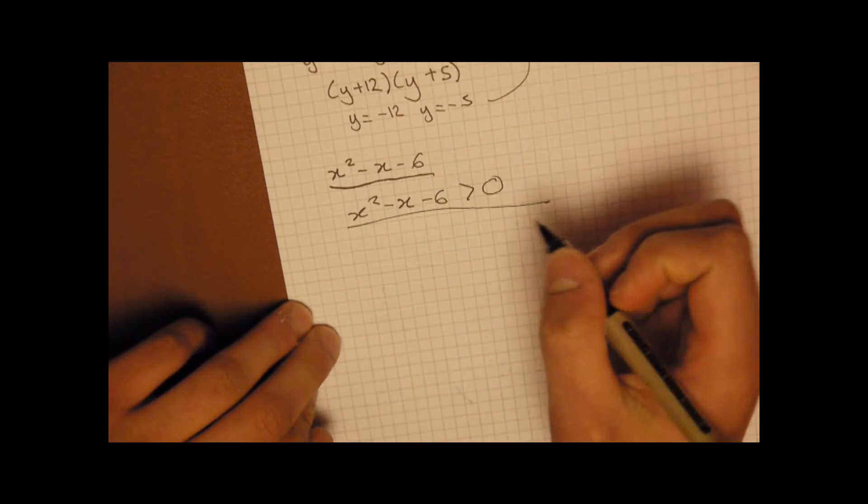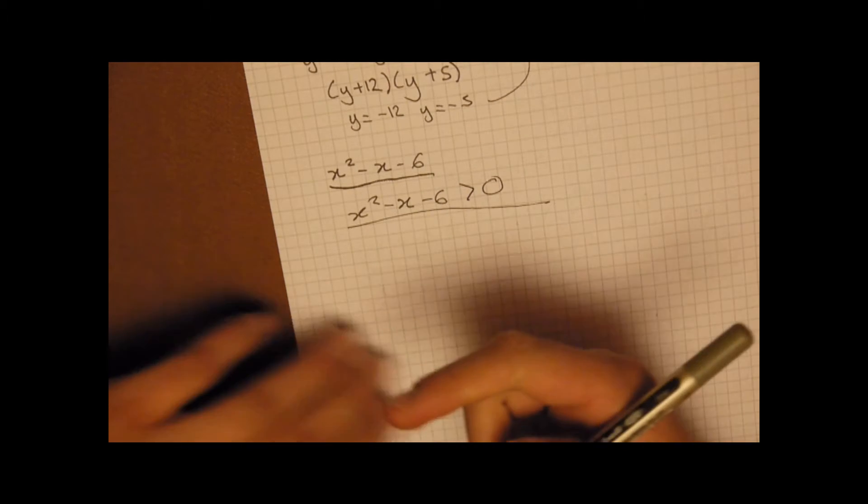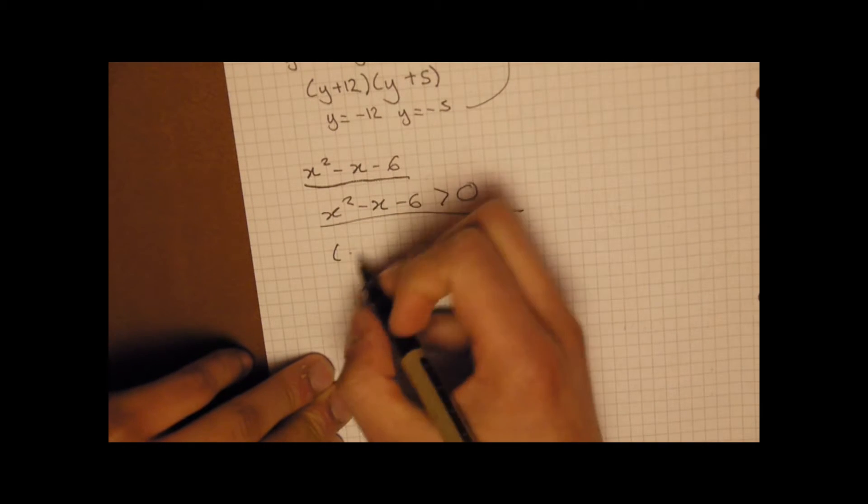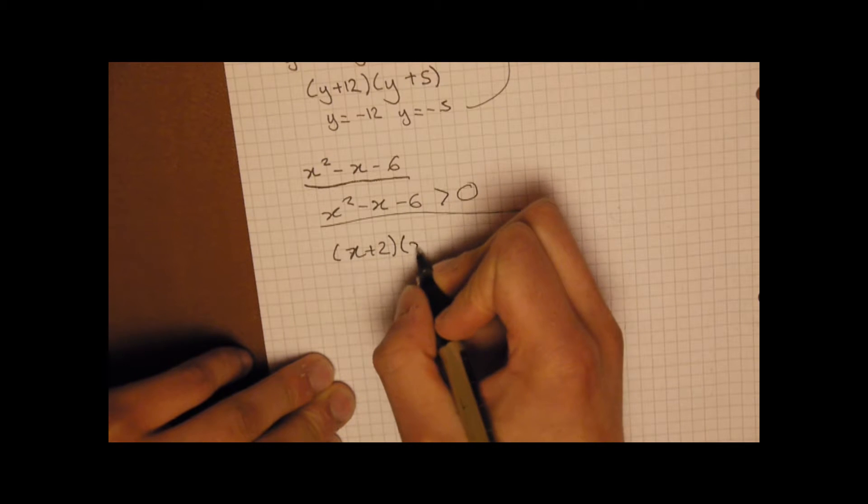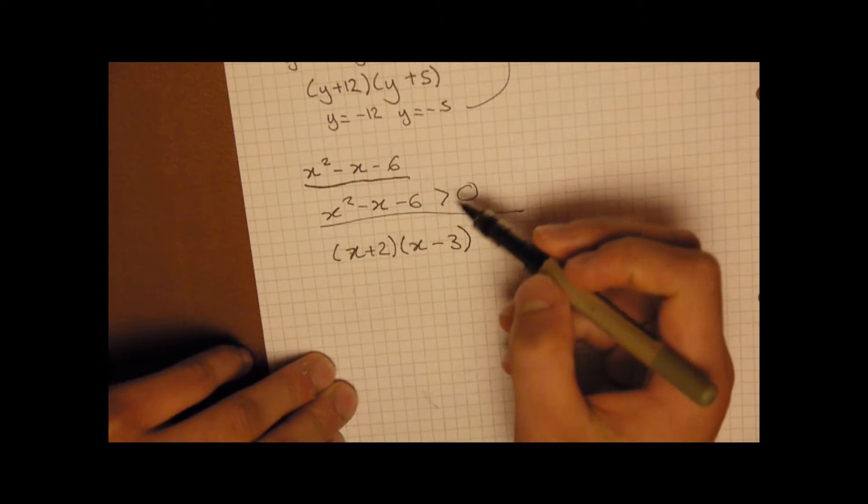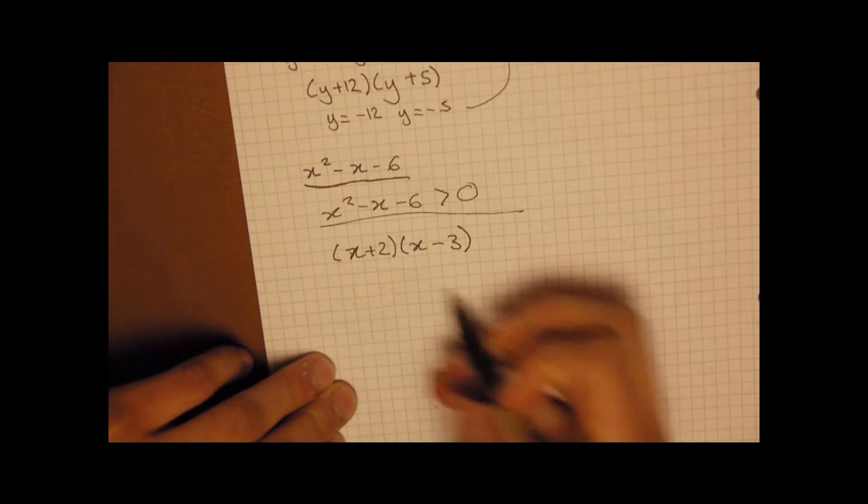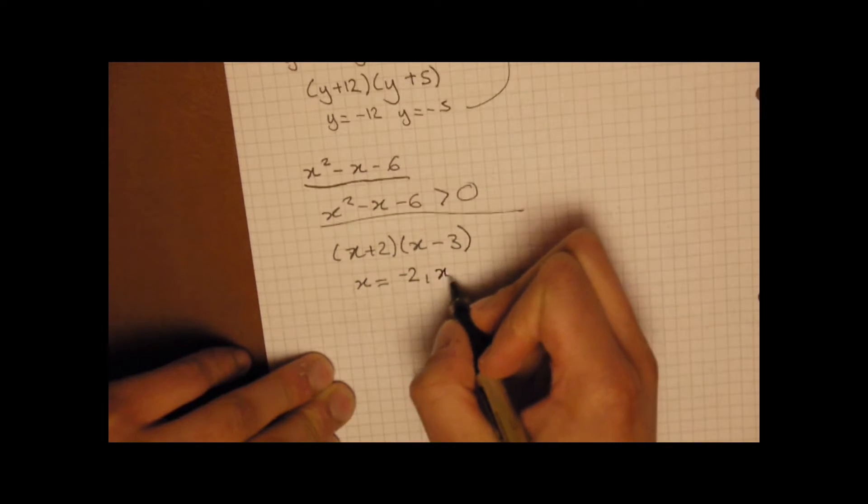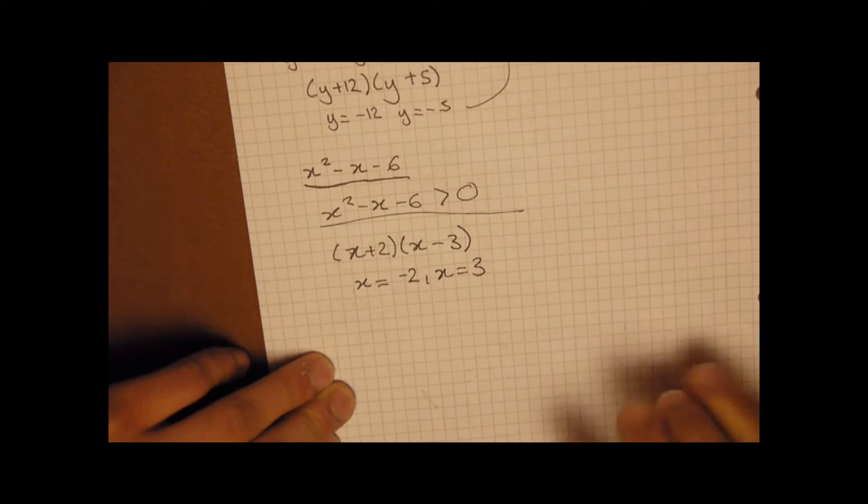That's what I'm going to do. Now, first of all, as you can guess, we might need to factorize it. Now, the factorizing is x plus 2, x minus 3. As you've probably guessed, it could be plus 2x minus 3, which is minus x. So therefore, we end up with an x value of minus 2 and an x value of 3.